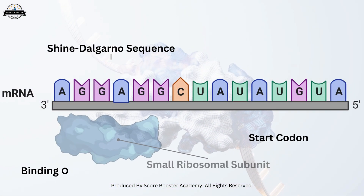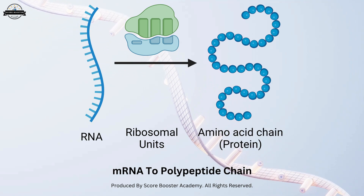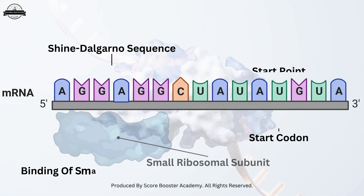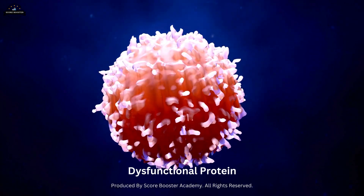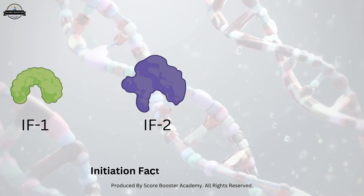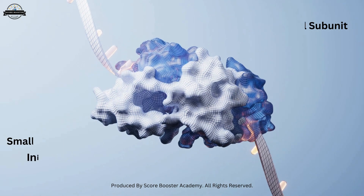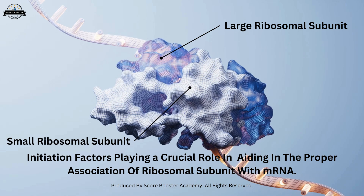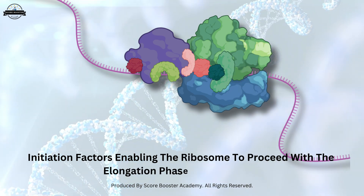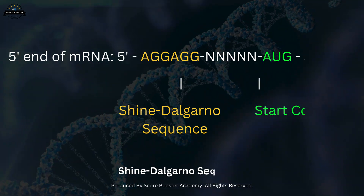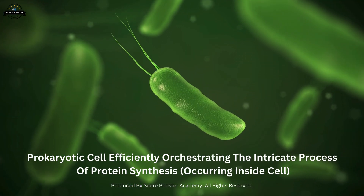The accurate binding of the small ribosomal subunit to the Shine-Dalgarno sequence ensures that the ribosome is correctly positioned to start translating the mRNA into a polypeptide chain from the appropriate start point. This precise alignment is essential for the fidelity of protein synthesis, as any deviation could result in the production of dysfunctional proteins. Initiation factors play a crucial role in the assembly of the ribosome and the commencement of translation, aiding in the proper association of the ribosomal subunit with the mRNA. They ensure that the initiation complex is correctly formed and stabilized, enabling the ribosome to proceed with the elongation phase.